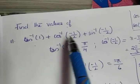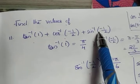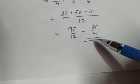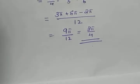Simplified, 9 pi by 12 gives the value 3 pi by 4. So to summarize, we calculated the principal value of each inverse trigonometric function and simplified to get the final answer 3 pi by 4.